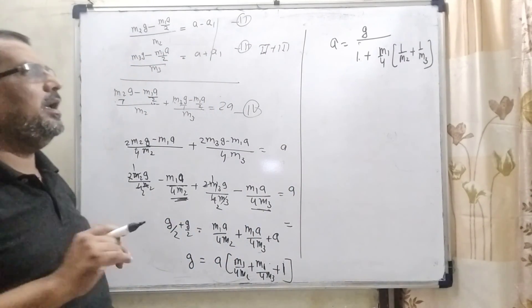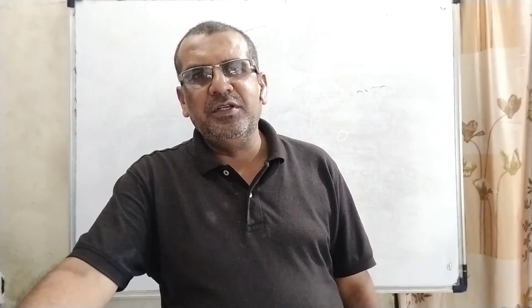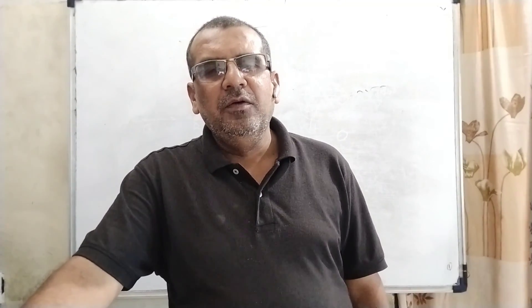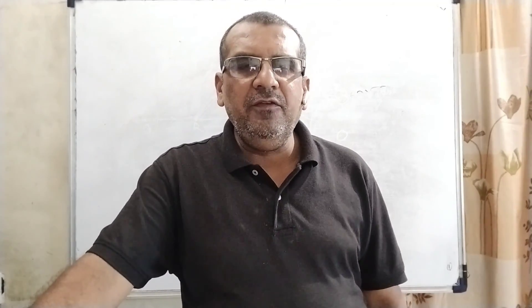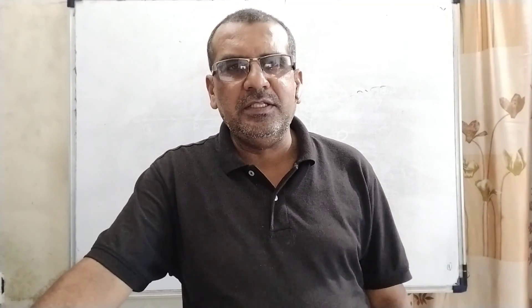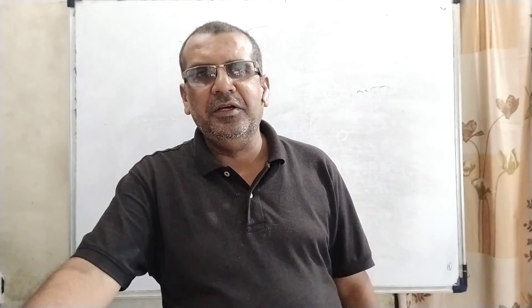So here you can see that correct answer is A equal to G by 1 plus M1 by 4 into bracket 1 by M2 plus 1 by M3. I hope you understood this question. Thank you for staying till the end of this video. Thank you once again, take care, bye bye.